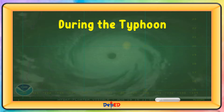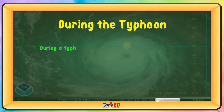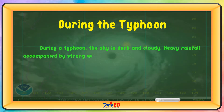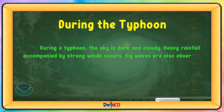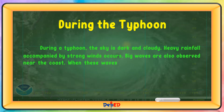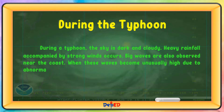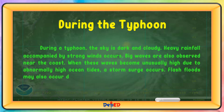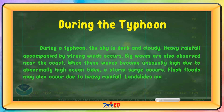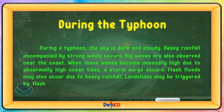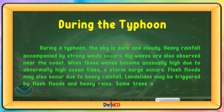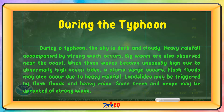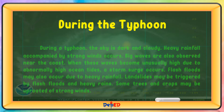During a typhoon, the sky is dark and cloudy. Heavy rainfall accompanied by strong winds occurs. Big waves are also observed near the coast. When these waves become unusually high due to abnormally high ocean tides, a storm surge occurs. Flash floods may also occur due to heavy rainfall. Landslides may be triggered by flash floods and heavy rains. Some trees and crops may be uprooted by strong winds.